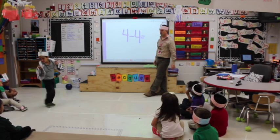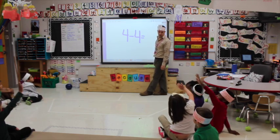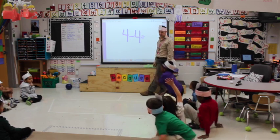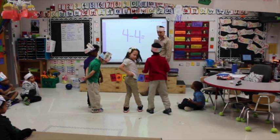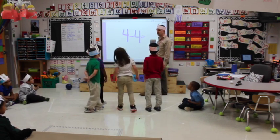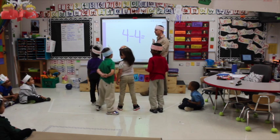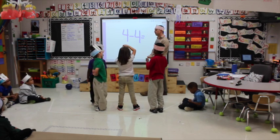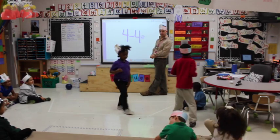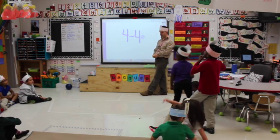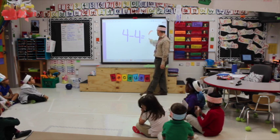And last one. Four minus four equals. One, two, three, four people on the boat. How many are going to get off the boat? Four. Get off my boat. Caitlin, how many people are left on my boat? Zero. Four minus four equals zero.